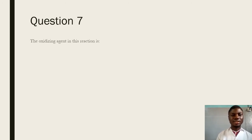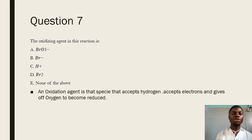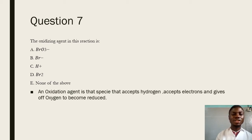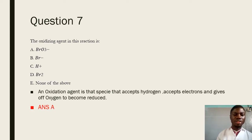Question 7 says: the oxidizing agent in this reaction is — we should be able to define an oxidizing agent. An oxidizing agent is that species in a reaction that accepts electrons and gives off oxygen to become reduced. Looking back at the equation, we can see that the bromate ion is going to give off its oxygen to become bromine, resulting in a decrease in oxidation state from +5 to 0. Therefore, the answer is going to be A.